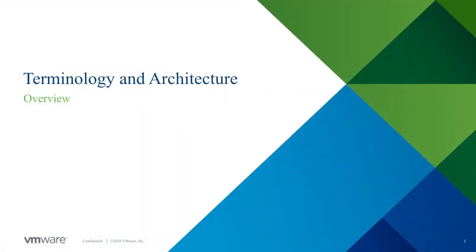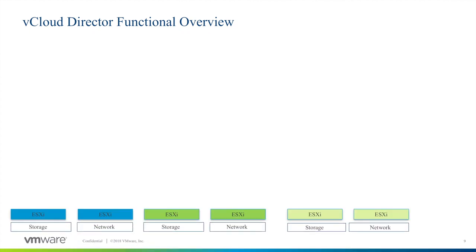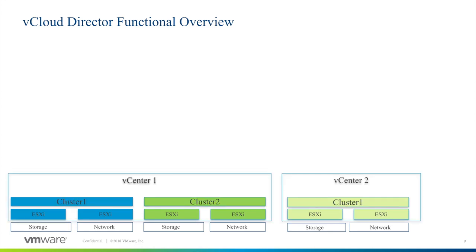First of all, let's have an overview of the terminology and architecture of vCloud Director. The Cloud Director relies on vSphere resources to provide CPU and memory to run virtual machines. vSphere data stores provide storage for virtual machine files and other files necessary for virtual machine operations. The Cloud Director also utilizes vSphere distributed switches and vSphere port groups to support virtual machine networking. You can use these underlying vSphere resources to create cloud resources.